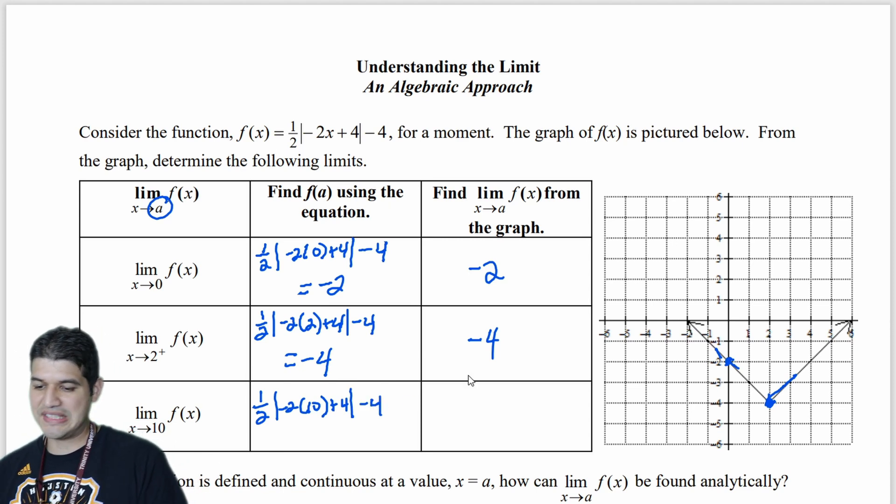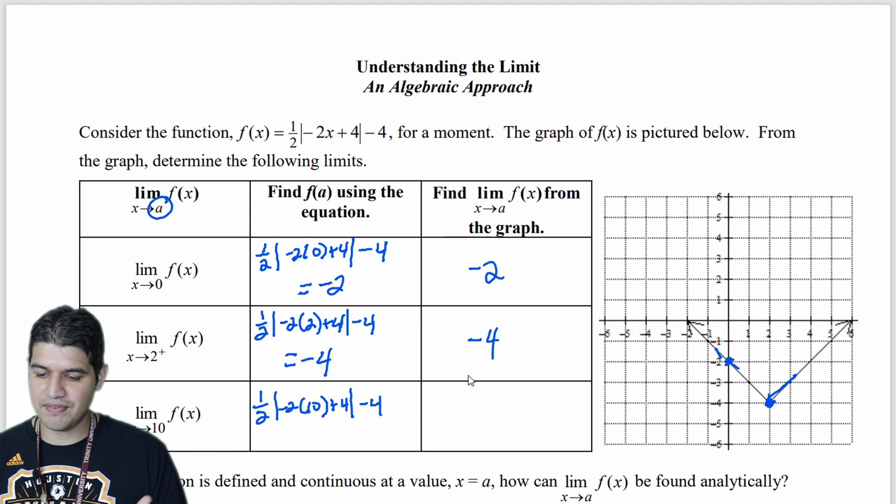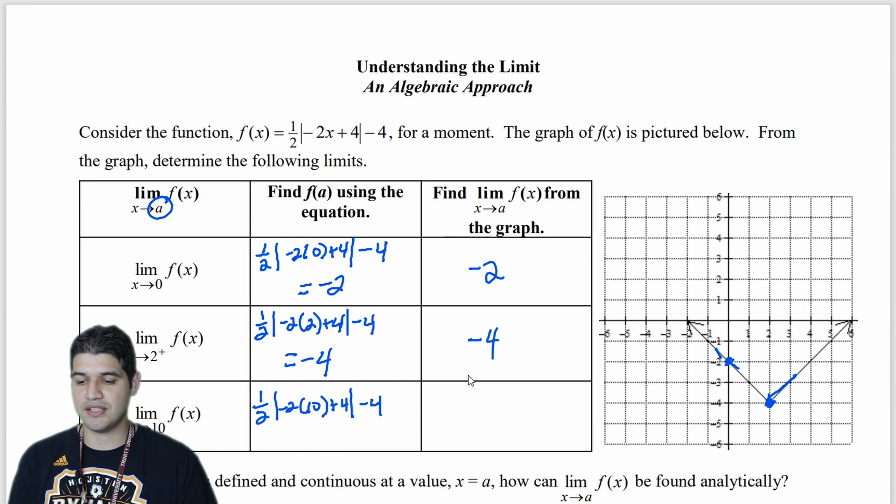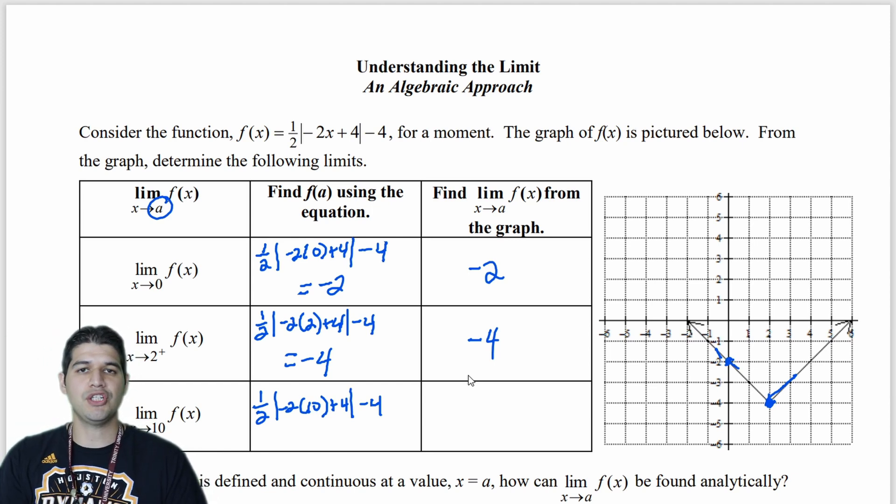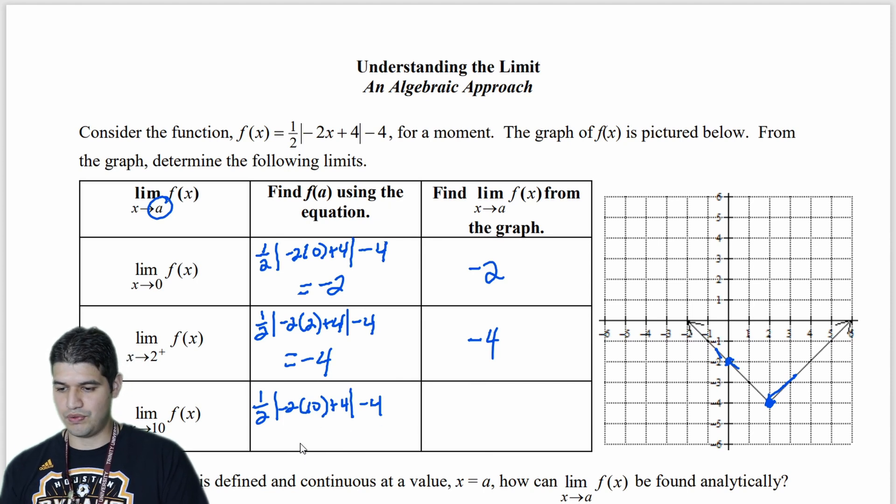Absolute value of negative 16 gets me positive 16. 16 divided by 2 is going to be 8. 8 minus 4 is equal to 4. Positive 4.